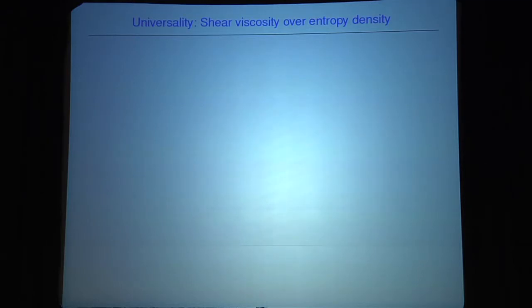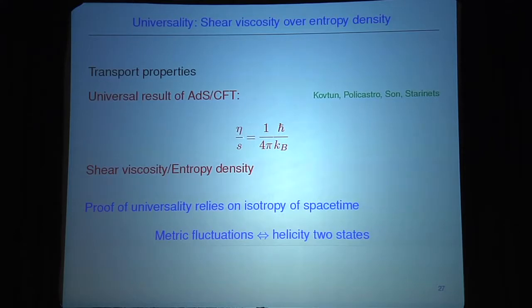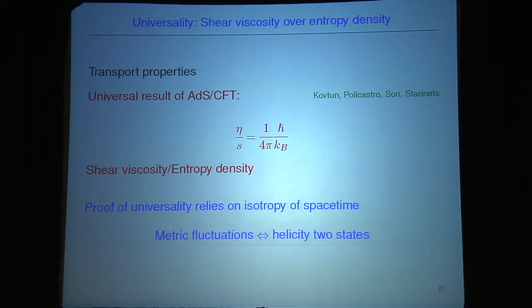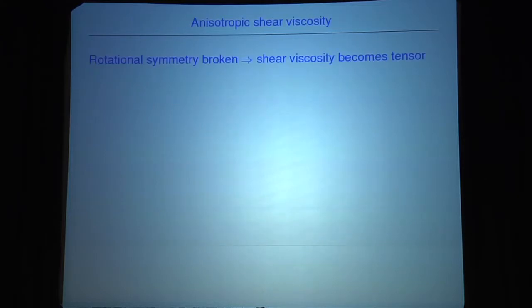Let me make a small detour about shear viscosity. As everybody knows, the most striking example of universality in gauge-gravity duality is the shear viscosity over entropy density, giving the famous ratio of 1/4π. There are different ways of proving this result is universal: as long as the leading term in your gravity action is a Ricci scalar, no other fields in the gravity action — going to non-commutative spaces etc. — will change this result. This proof of universality relies on the isotropy of space-time, which means metric fluctuations will be helicity-two states.